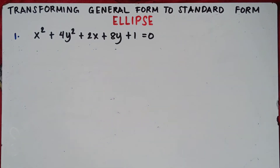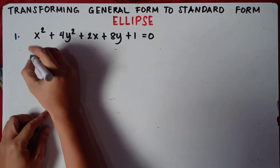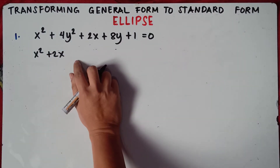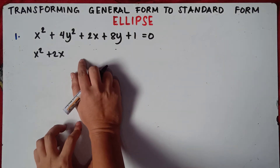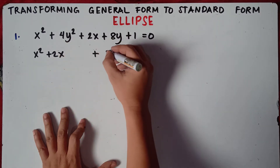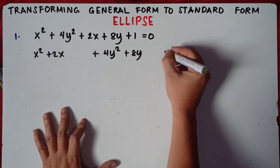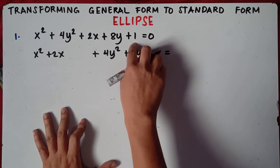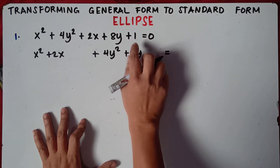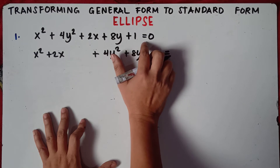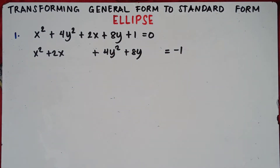The first step is to separate the x variables and y variables. So we have x squared plus 2x, and leave a space because we will need to complete the square — we need to add a new constant. Then separate the y variables: 4y squared plus 8y, and leave a space. Then transpose the constant to the right side of the equal sign. This is positive 1, so it becomes negative 1. Once you transfer a number across the equal sign, you always change the sign.